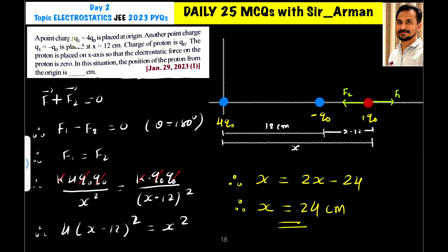A point charge Q1 equals 4Q0 is placed at the origin. Another point charge Q2 equals minus Q0 is placed at x equals 12 centimeters. The charge of proton is Q0.